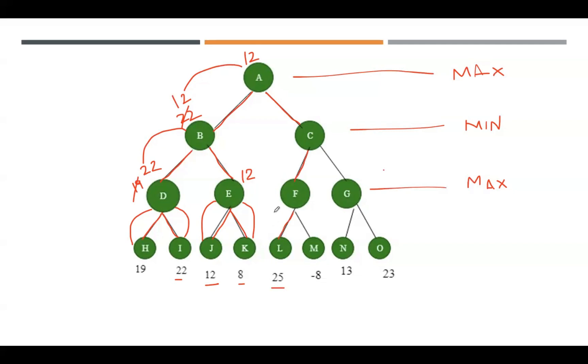Here we have 25. 25 is sent back to parent F. After that, move towards the right side of node F, which is -8. Send -8 back to parent. Among 25 and -8, the maximum value is 25. This 25 will be retained at this point.